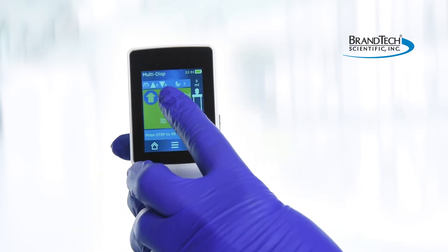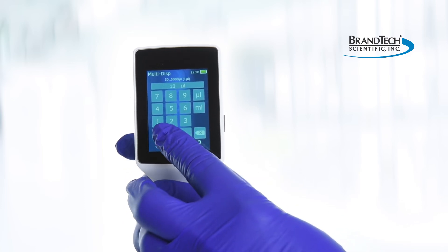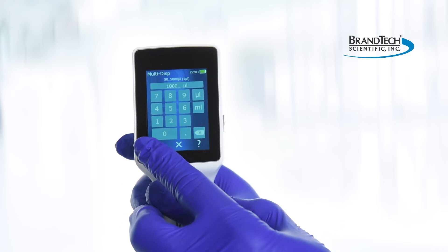To set the desired dispensing volume, tap on the water droplet icon. Type in the desired dispensing volume using the keypad. Then tap to confirm.